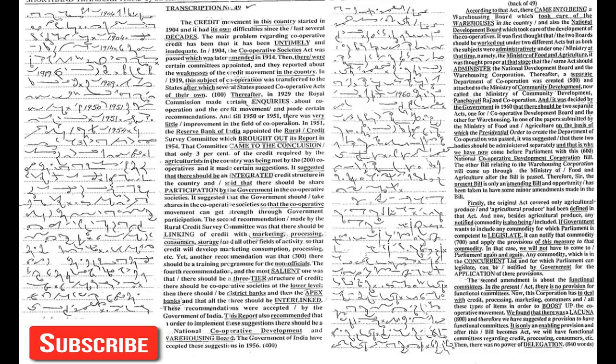Get ready, start. The cooperative credit movement in this country started in 1904 and it had its own difficulties. Since the last several decades, the main problem regarding cooperative credit has been that it has been untimely and inadequate. In 1904 the Cooperative Societies Act was passed, which was later amended in 1914.